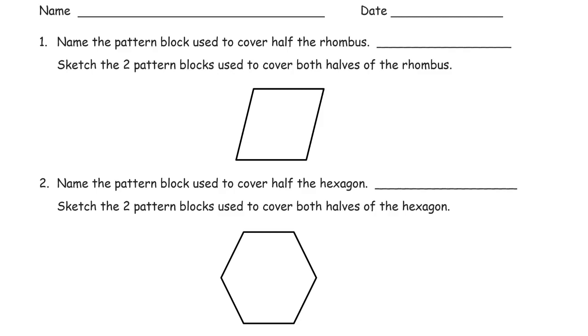They've got yellow hexagons and red trapezoids. If you put two of them together, they make one of the yellow hexagons. And they've got green triangles and blue rhombuses and orange squares.